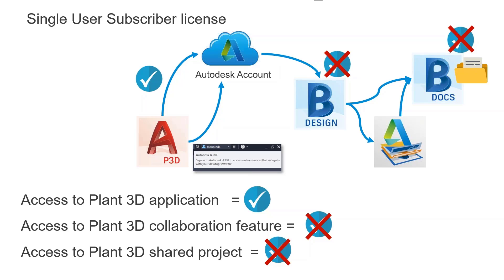To get access to the collaboration feature, you also need to have BIM 360 Design. When you have that, it will show up in Autodesk Account. In the subscriber world, it checks that through your profile. That will then give you access to the BIM 360 suite of tools assigned under Design. You can use Desktop Connector to access the project, and it gives you access to the doc space as well. It's worth noting that Plant3D is accessing a folder inside your BIM 360 Docs folder structure.